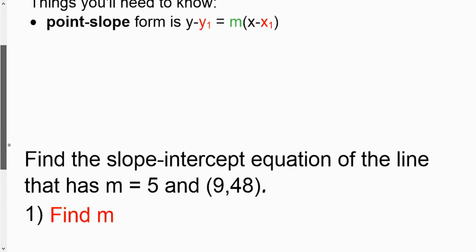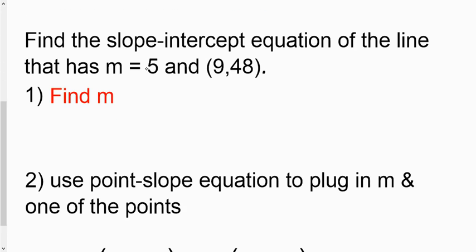We'll find the slope-intercept equation of a line that has m equals 5 and (9,48) as a point that the line goes through. So this is the line's slope, and this is a point that the line goes through. So what is m? Well, it's 5, so that part's already done for us.